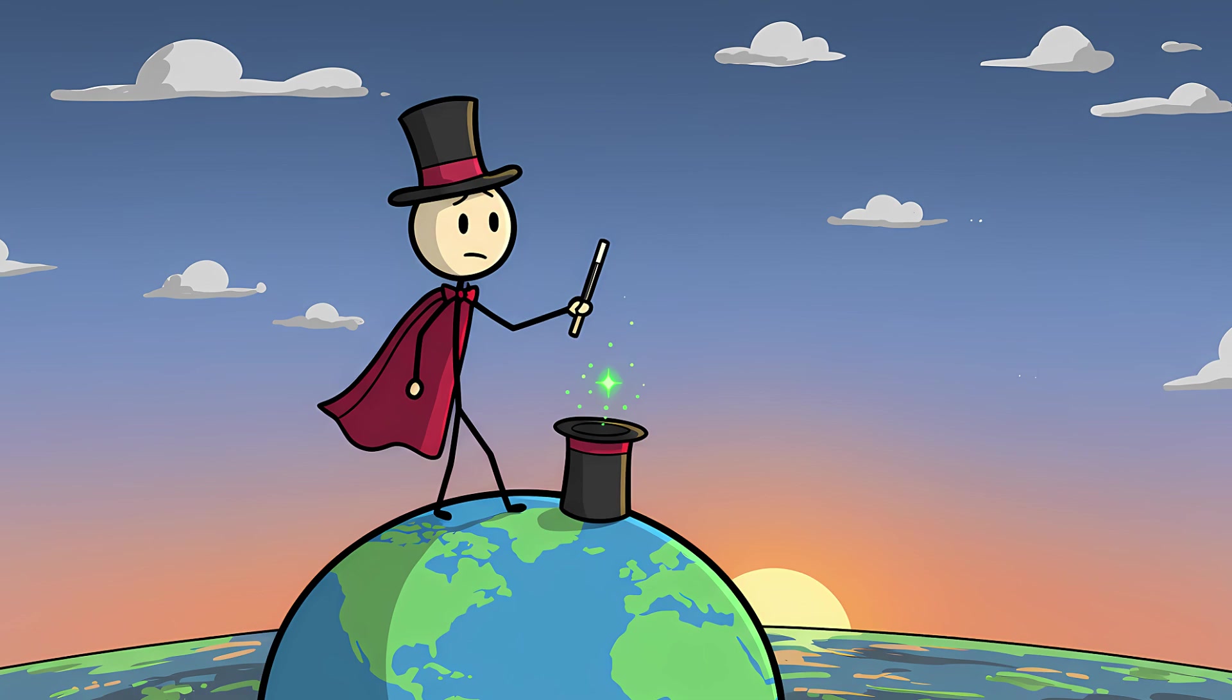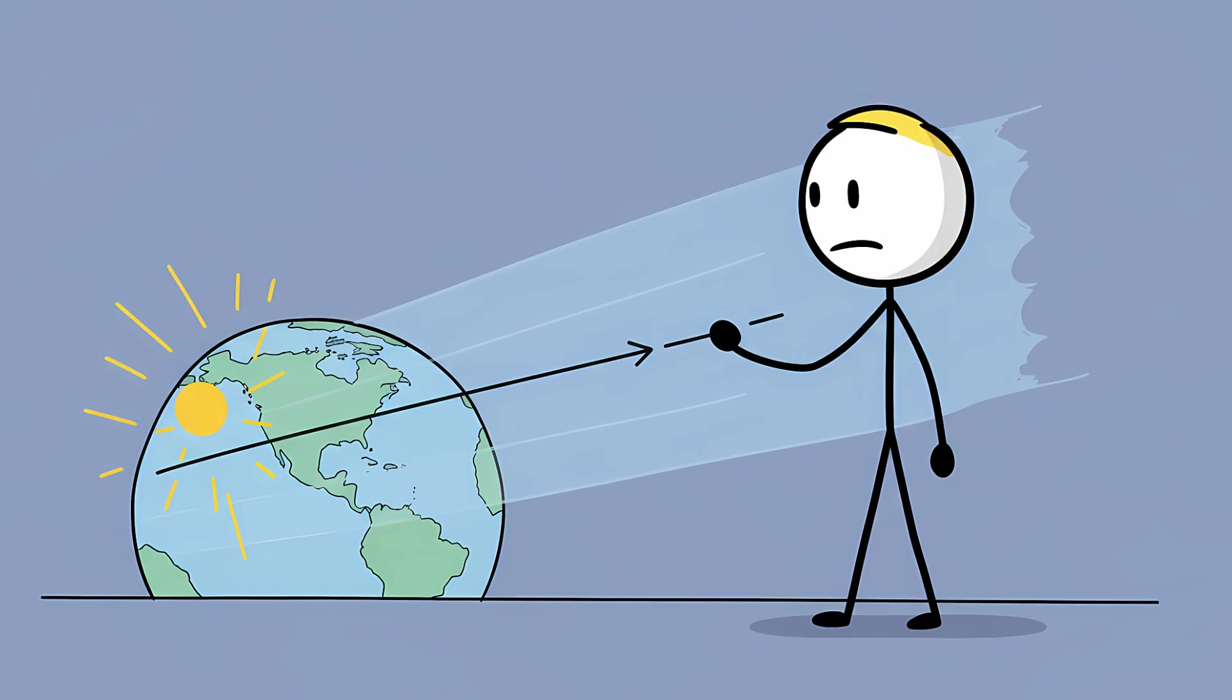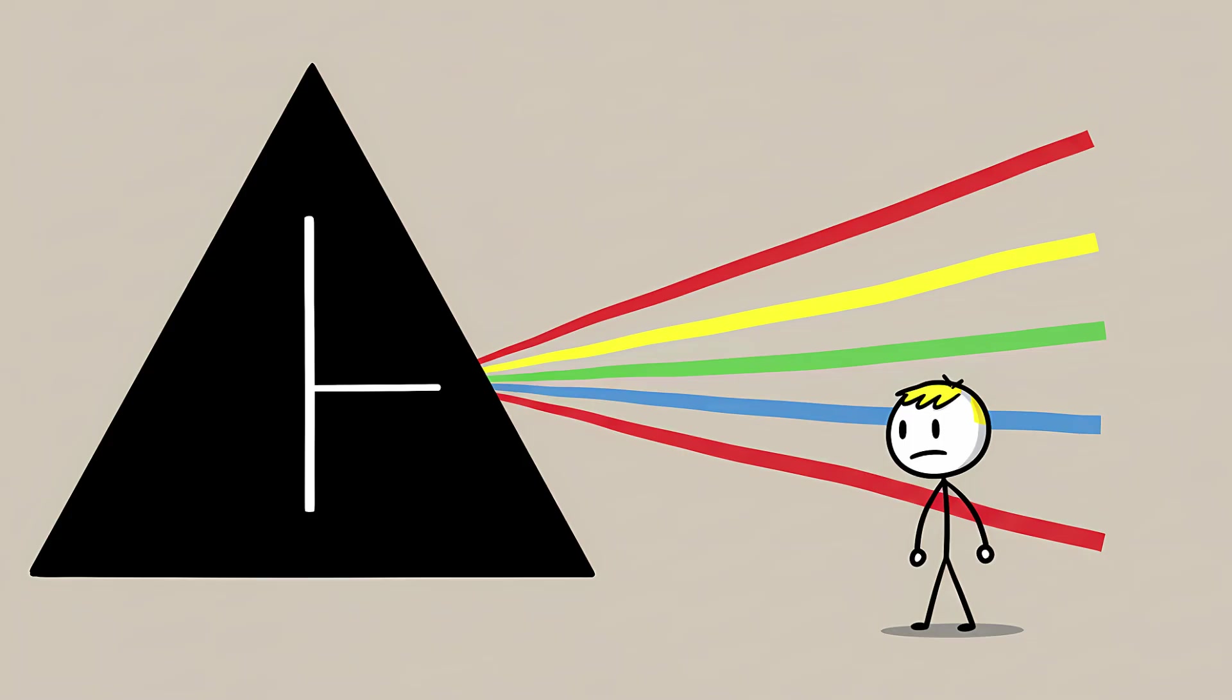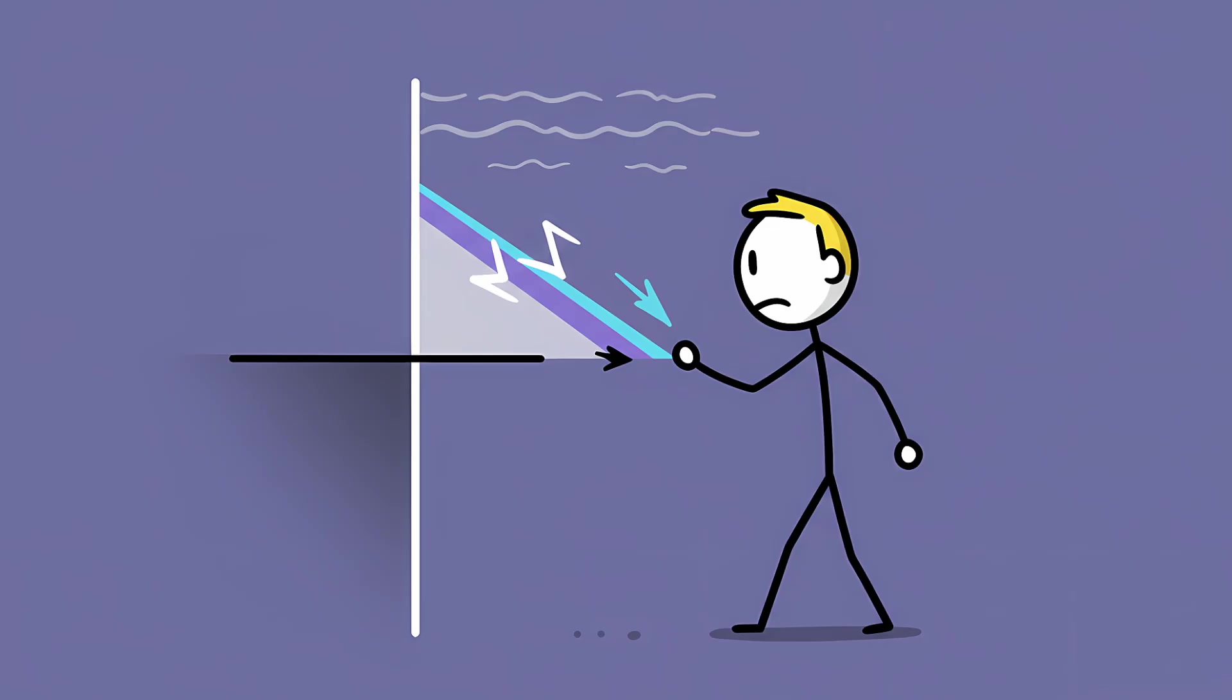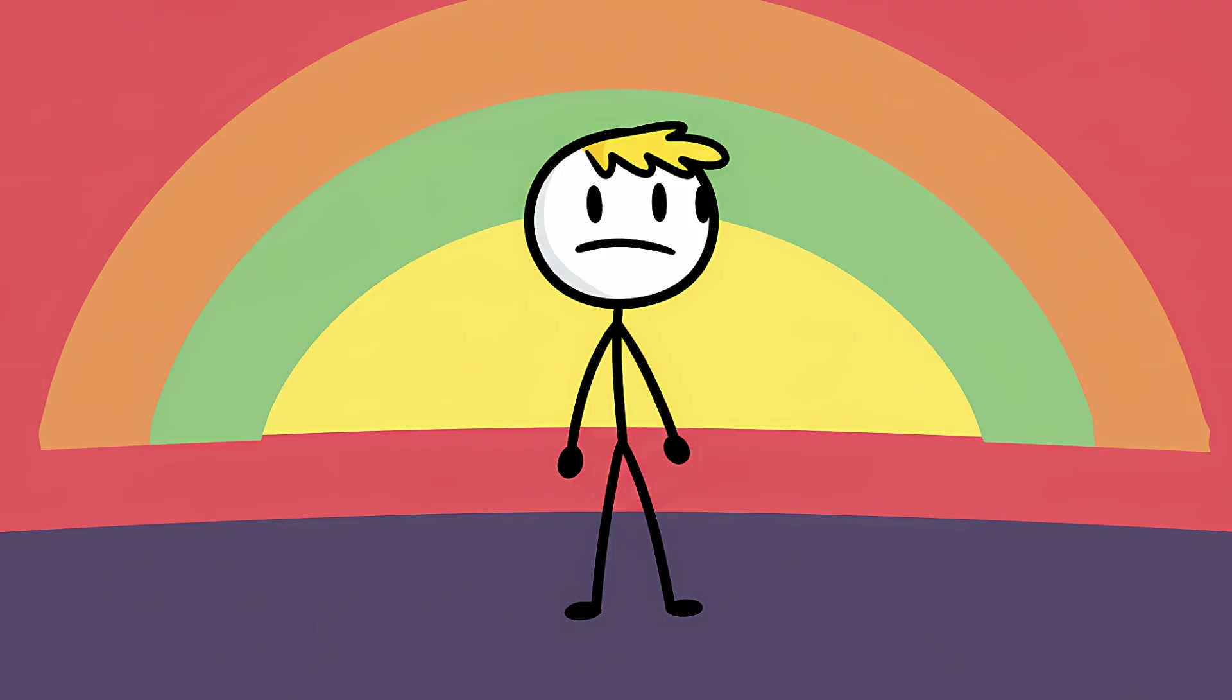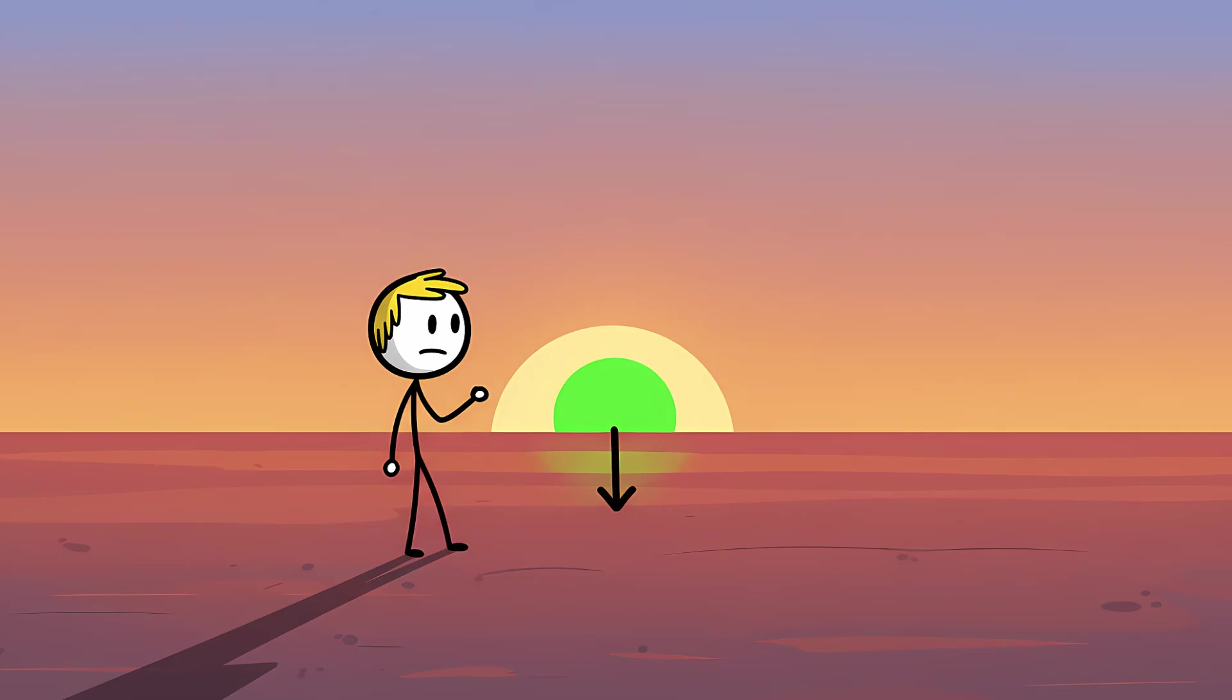But the Green Flash is very real, and it's not a ghost ship indicator. It's a spectacular atmospheric magic trick. Your high school science teacher probably told you that Earth's atmosphere acts like a prism, bending light as it passes through. This is true. When the sun is low on the horizon, its light has to travel through the thickest, densest part of the atmosphere. Our air splits that sunlight into its component colors, just like a Pink Floyd album cover. The red and orange light, having longer wavelengths, bend the least. The blue and violet light, with their short, zippy wavelengths, bend the most. So, for a split second, the atmosphere creates a layered rainbow image of the sun. The red image sets first, followed by the orange, then yellow. The green image is next in line.